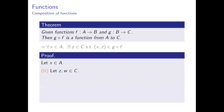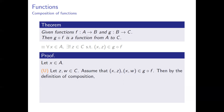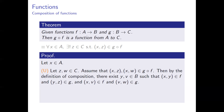Next, we show uniqueness. Let z and w be elements of C and assume that the ordered pairs (x, z) and (x, w) are elements of gf. Then, by the definition of the composite relation gf, there exist elements y and v in B such that (x, y) is an element of f and (y, z) is an element of g, and (x, v) is an element of f and (v, w) is an element of g.